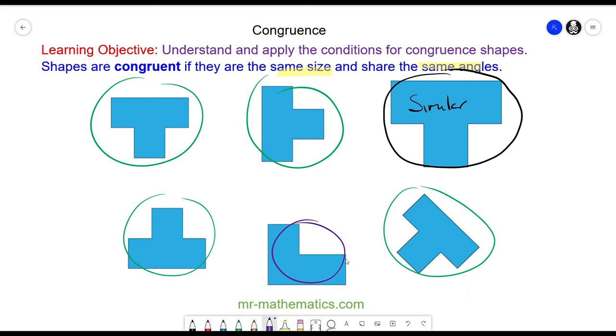In mathematics, there are four ways of proving whether two shapes are congruent. We're going to look at them in this lesson.